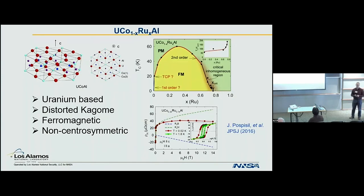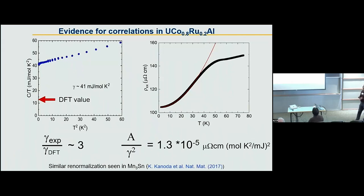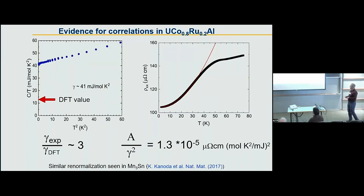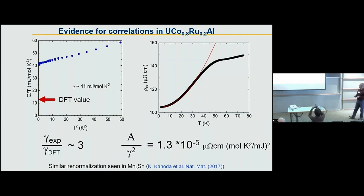Is the material correlated? Yes, at least to a moderate extent. The specific heat as a function of T-squared gives a Sommerfeld coefficient of 40 millijoules per mole per Kelvin squared — roughly a factor of three larger than from DFT alone — indicating mass renormalization. This is further confirmed by the resistivity versus temperature, where you can extract a T-squared component at low temperatures consistent with the Kadowaki-Woods ratio. So there is some presence of correlations in this material.